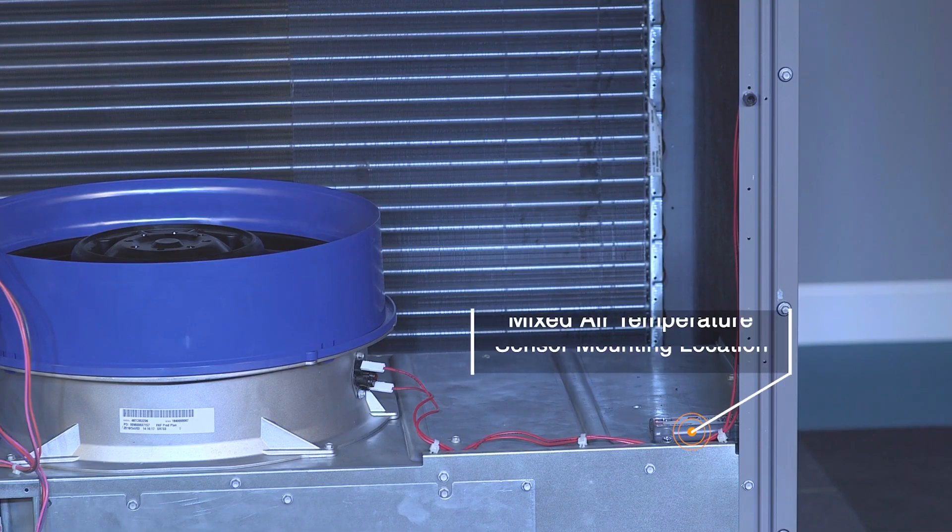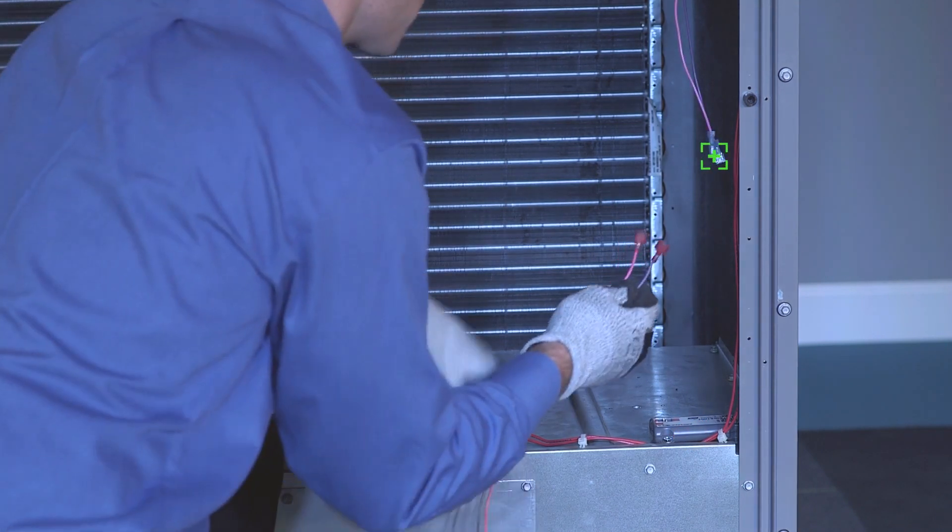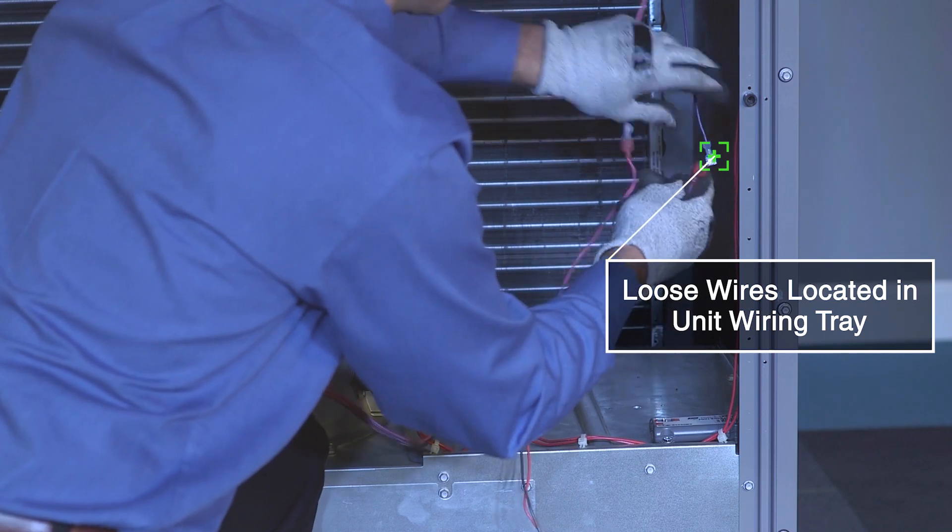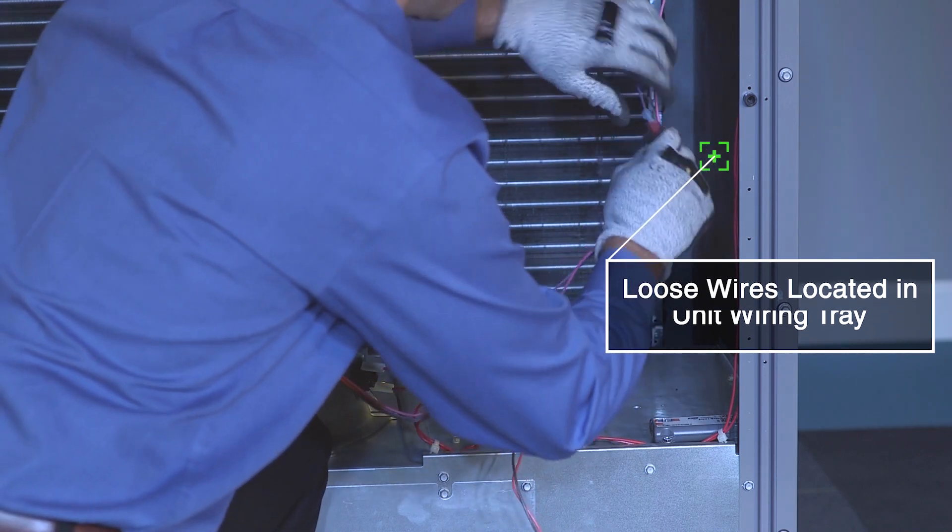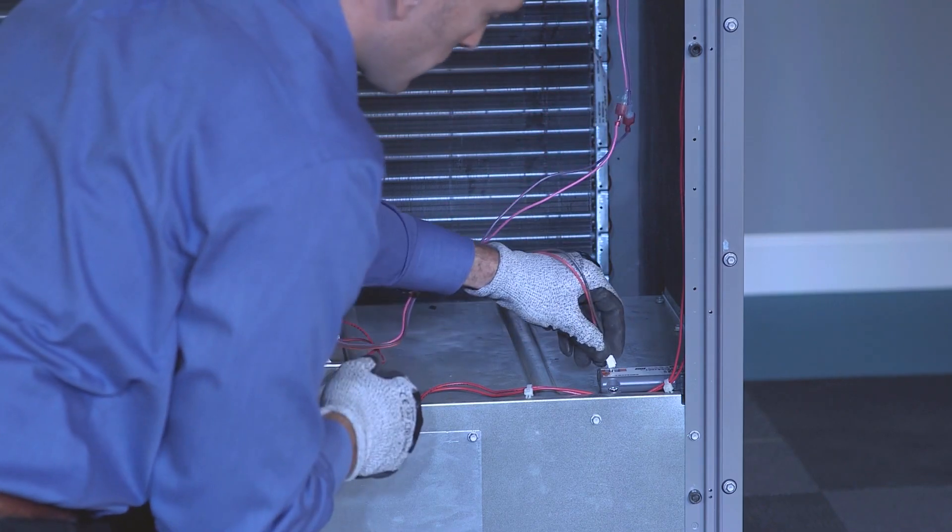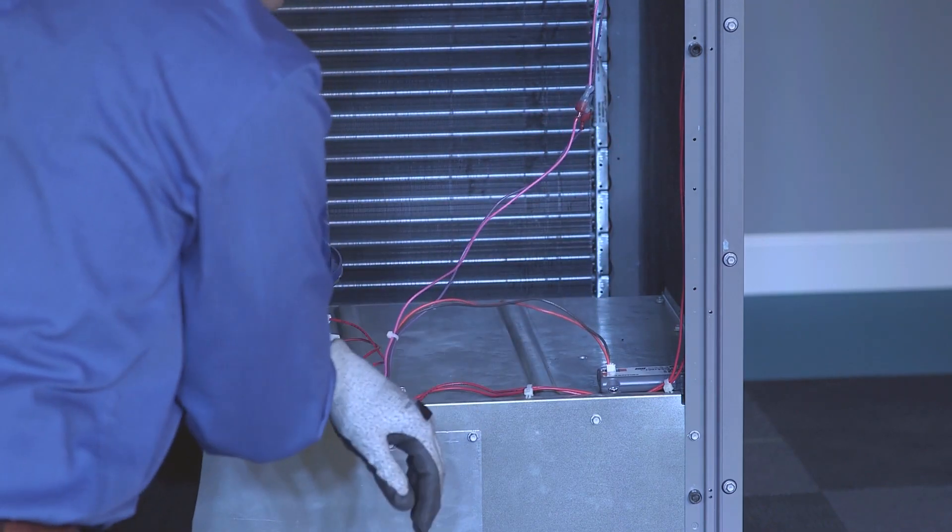Mount the mixed air sensor in the indoor blower section. Connect the pink and violet male quick connects from the four-wire harness to the pink and violet female quick connects that are loose in the indoor blower section. Connect the two-pin plug from the four-wire harness to the mixed air sensor.